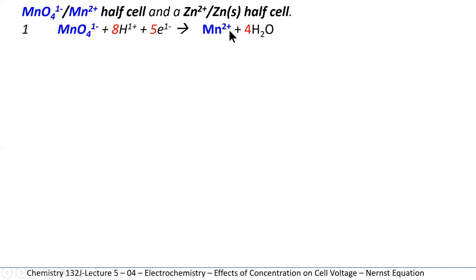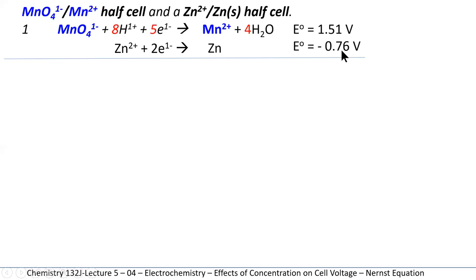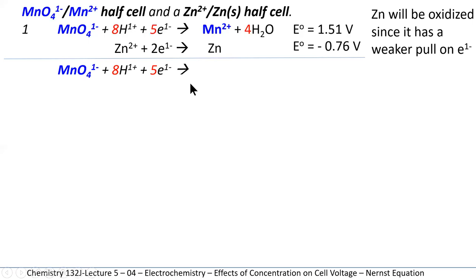We can find this half-cell reaction in the voltage table. The standard voltage when connected to a hydrogen half cell is 1.51 volts. Looking up zinc 2+ being reduced to zinc, the voltage is minus 0.76 volts. Since permanganate has a much stronger pull on electrons than zinc, zinc will not be reduced — zinc will be oxidized. So we change the zinc voltage to positive, and E-naught of the cell will be the sum of both half-cell voltages when connected into a functioning galvanic cell.